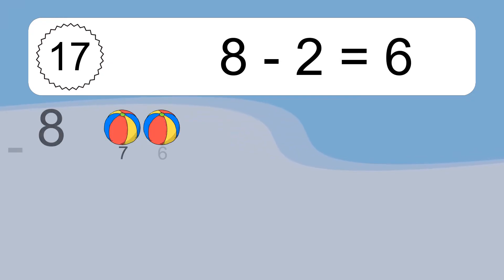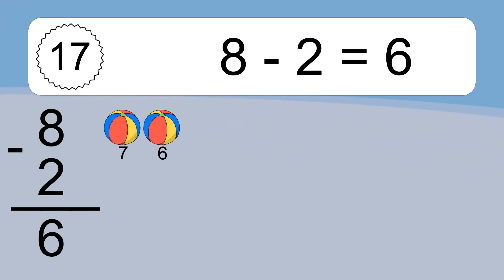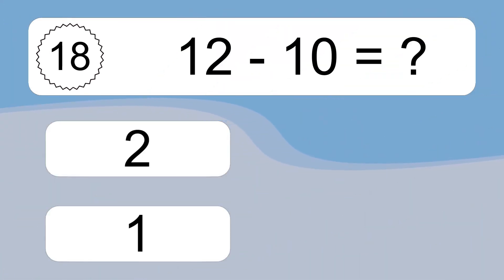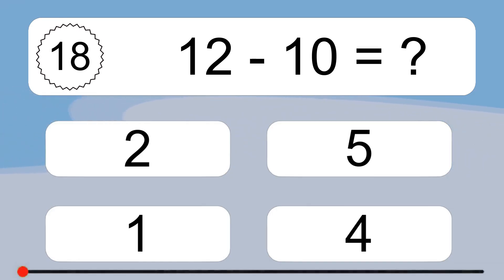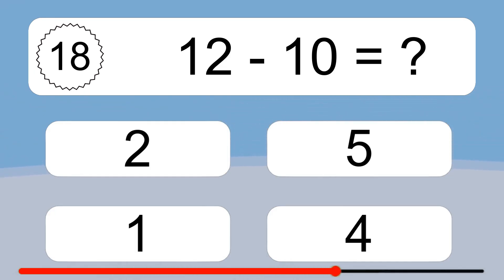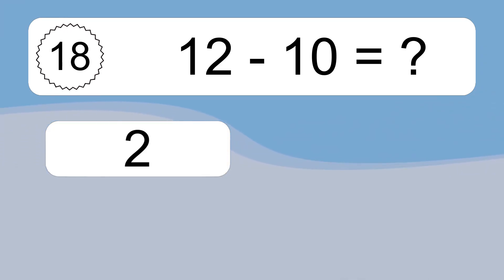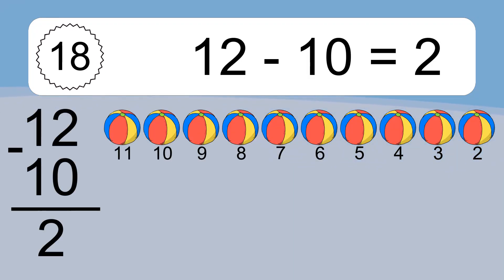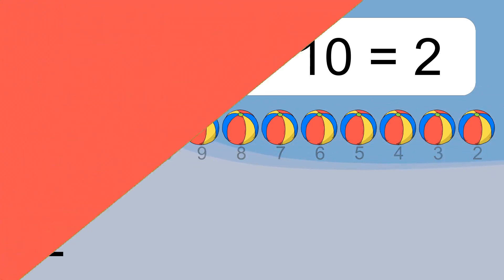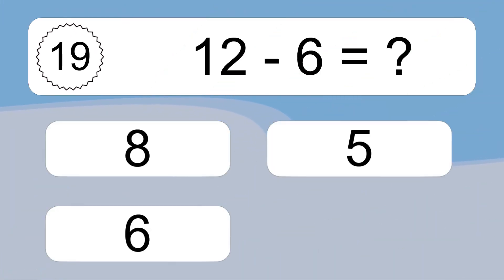8 minus 2 equals 6. Let's count it. 7, 6. 12 minus 10 equals what? 12 minus 10 equals 2. Let's count it. 11, 10, 9, 8, 7, 6, 5, 4, 3, 2.